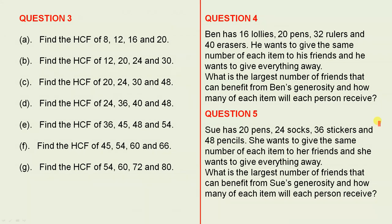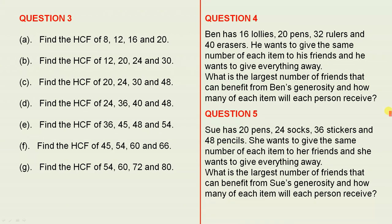Question 5: Sue has 20 pens, 24 socks, 36 stickers, and 48 pencils. She wants to give the same number of each item to her friends and give everything away. What is the largest number of friends that can benefit from Sue's generosity, and how many of each item will each person receive? This is exactly the same idea and we solve it using the notion of the highest common factor. These worksheets give us practice using highest common factor, helping us understand its meaning, and importantly we've seen two everyday problems solved using the idea of the highest common factor.